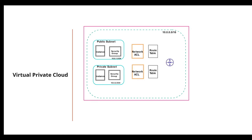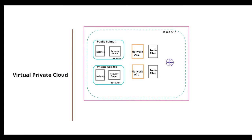By default, when you create a VPC, it will have a local router that facilitates default routing for communication within the VPC. Each router has a route table called the main route table, which contains rules called routes that determine where network traffic from your subnet or gateway is directed. Each subnet must be associated with a route table. The main route table controls routing for all subnets not explicitly associated with another route table, and a subnet can only be associated with one route table at a time.